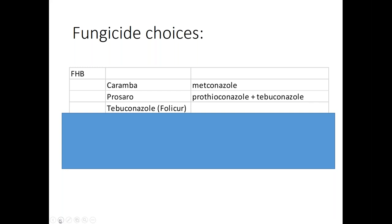The products being used right now include Caramba, which is probably the most popular, Prosaro also popular, Folicure now less used, and generic Tebuconazole. All three trade names contain the term 'conazole' — they're all triazole fungicides, all Group 3. If you've been using similar Group 3 products on foliar timing, be cautious — you may be repeatedly using the same group of fungicide and inadvertently selecting for resistance in pathogens.